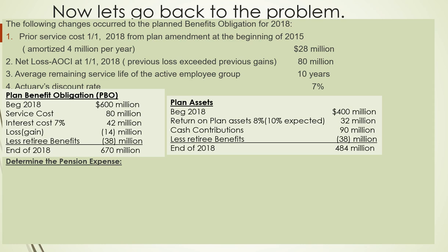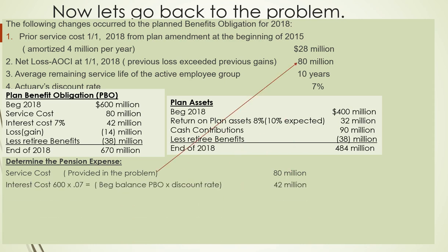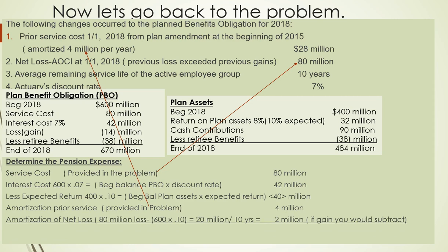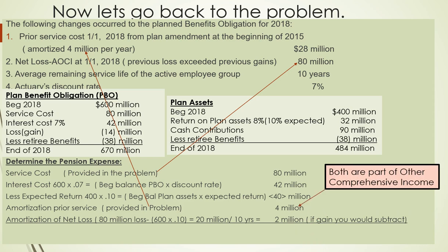Now we can determine the pension expense. We have service cost of 80 million (provided), interest cost which is the beginning balance times the discount rate (42 million), less the expected return of 400 million times 10% (40 million — always use expected return and always subtract it), plus amortization of prior service of 4 million (provided), plus the amortized net loss of 2 million. Note that amortized prior service cost and amortization of net loss are both part of other comprehensive income. Adding all of these gives a pension expense of 88 million.